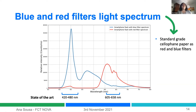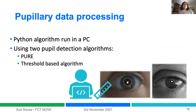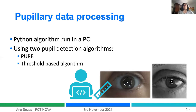We then work with algorithms to detect the pupil size in each frame. In each frame of the video, we detect the eye, convert it to grayscale, and apply a pupil detection algorithm to get the pupil size data needed to build the pupil response graphics over time. This pupillary data processing is currently run in Python on a computer after acquisition — it is not yet real-time, but post-acquisition. We are using two different pupil detection algorithms.